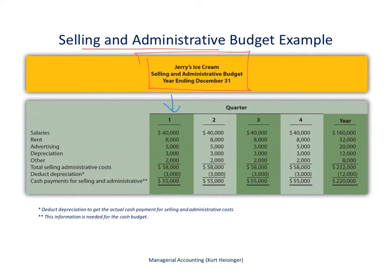The selling and administrative budget for Jerry's Ice Cream covers the year ending December 31st and is prepared quarterly. The first quarter is January 1st through March 31st, since their fiscal year matches the calendar year. The second quarter covers April 1st through June 30th, followed by the third and fourth quarters, plus an annual summary column.